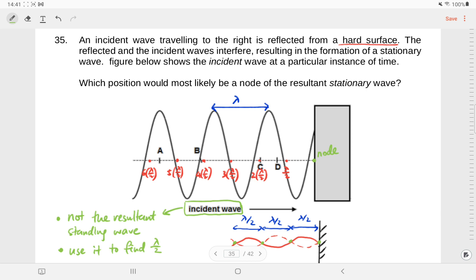So after you know where is lambda, you know where is lambda over 2. Then from the wall, mark out all the positions corresponding to multiples of lambda upon 2. Once you've done that, you'll know the answer will be C.